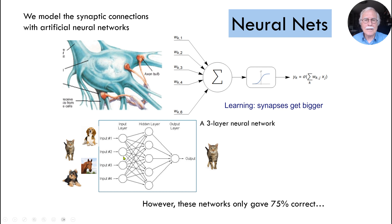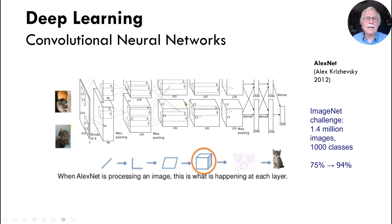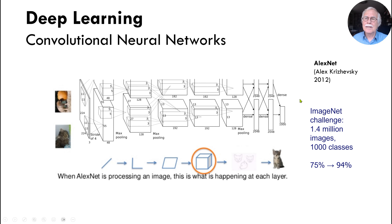We used to have three layers in the network, but those were not so good — only about 75%. Now we have much deeper networks. This early network from 2012 gave a big success: a major challenge was finding 1,000 classes in 1.4 million images. It was always around 75%, and today it is 94% exploiting these deep neural networks.